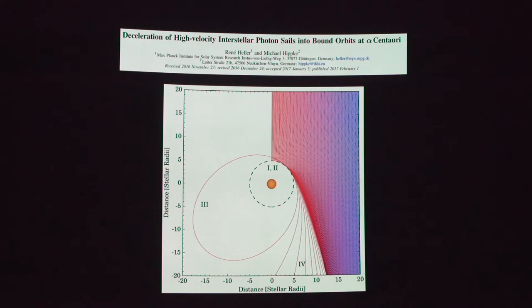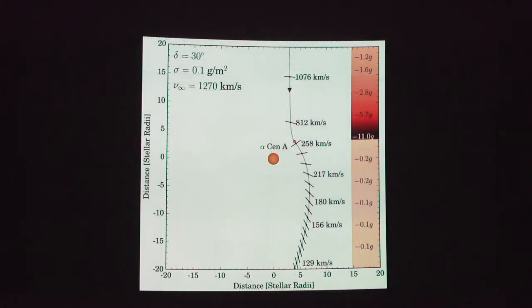And so not only can you, depending on the trajectory, actually get the spacecraft to go into a closed elliptical orbit, meaning instead of flying right through the system, you can actually get it to orbit Alpha Centauri.